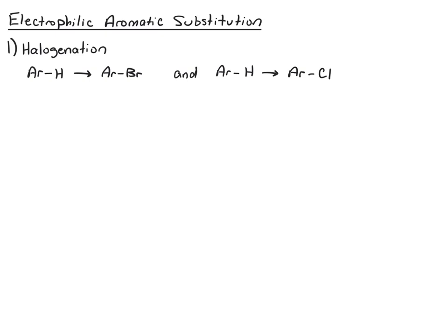In this first one, we're going to look at a halogenation, where we replace a hydrogen on the aromatic ring, and this Ar is just an arene abbreviation. So we can replace it with a bromine or replace it with a chlorine. The reaction and mechanism for both of these are identical. Just one uses Br2 as the electrophile, the other uses Cl2.